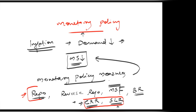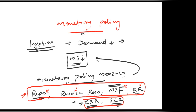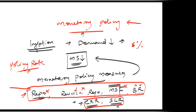All four rates — repo, reverse repo, marginal standing facility, and bank rate — are actually connected with the repo rate, which is also called the policy rate. RBI won't announce separately reverse repo, MSF, or bank rate because all are connected with repo. RBI fixes only the repo rate, which we can call the policy rate. If it's fixed at, say, six percent, all other rates are directly linked to it.